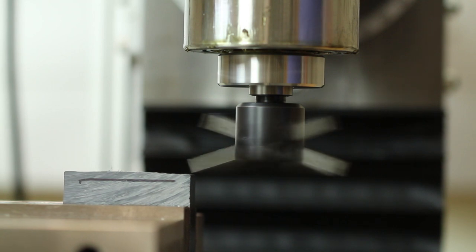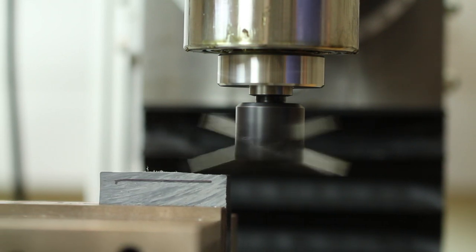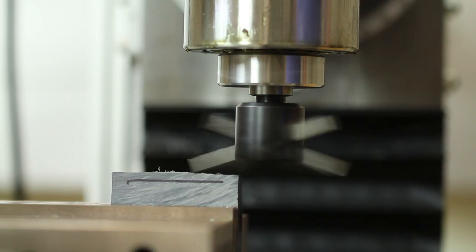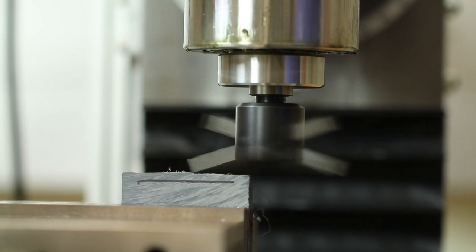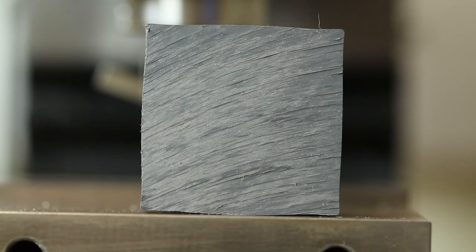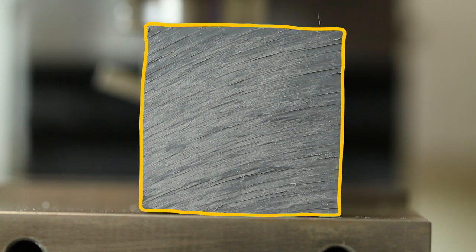A fly cutter removes broad swaths of material and is often used in preparing stock for more precise machining operations. The pump body block is cut from an extrusion of ABS plastic. The sides of the extrusion are not flat.